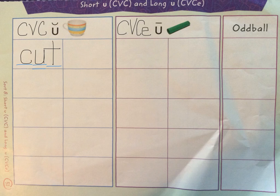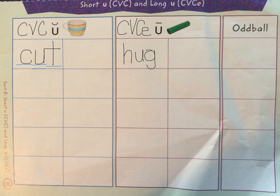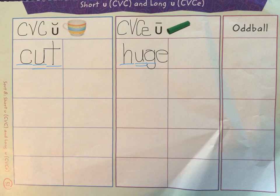Now let's do long vowel U. Find the word 'huge' and place it under the long U pattern. Huge is spelled H-U-G-E. I had a huge piece of cake yesterday at the birthday party. In the word 'huge,' we have a consonant, U which is our vowel, a consonant, followed by an E in the pattern. And when we say 'huge' out loud, we hear the U say its own name.